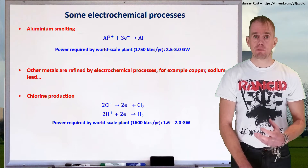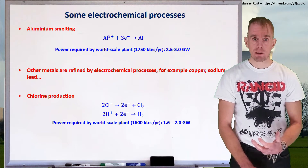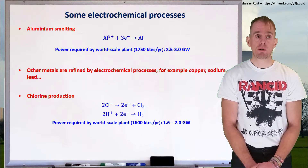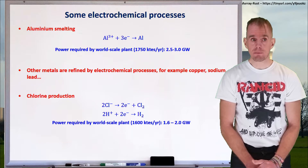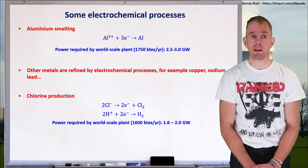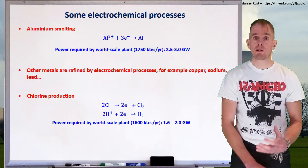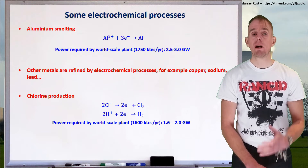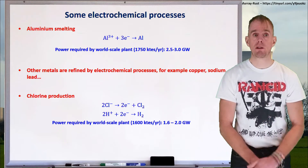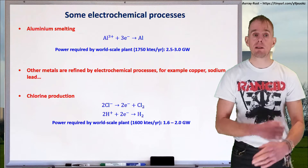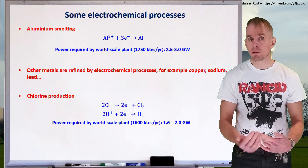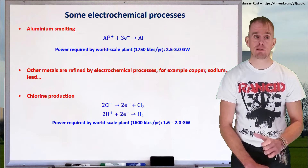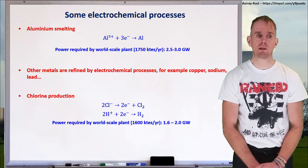Chlorine is produced from solutions of sodium chloride in an electrolytic process where chloride is oxidised to give chlorine gas, and hydrogen ions are reduced to give elemental hydrogen. A world scale plant would produce about 1.6 million tonnes per year of chlorine, requiring between 1.6 and 2 gigawatts of electrical power — equivalent to one large or two smaller power stations. It is a very electrically intensive process.